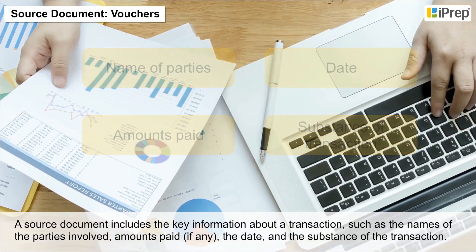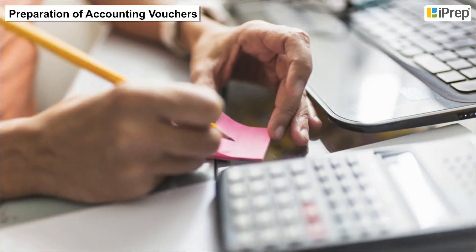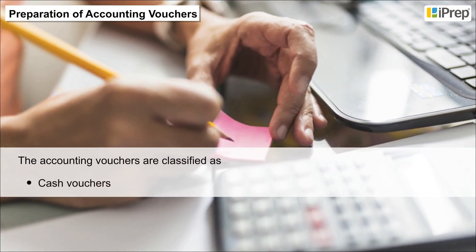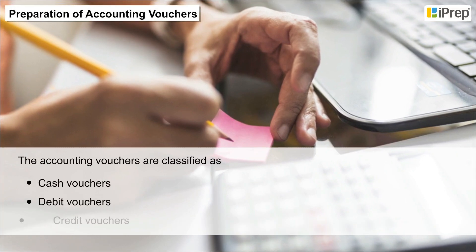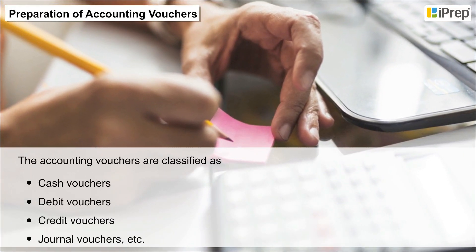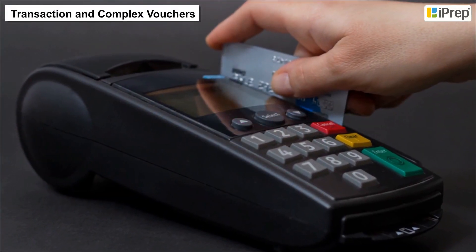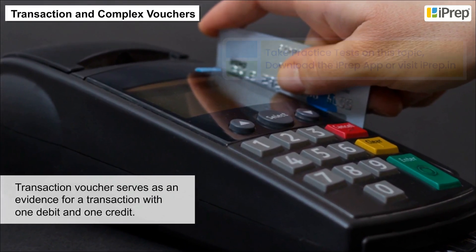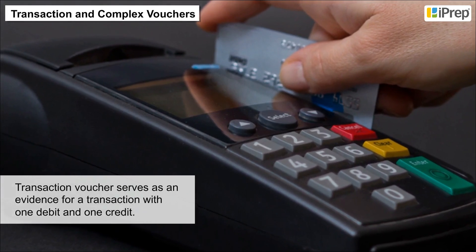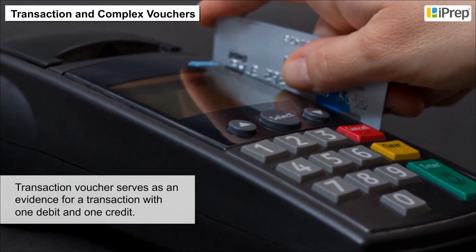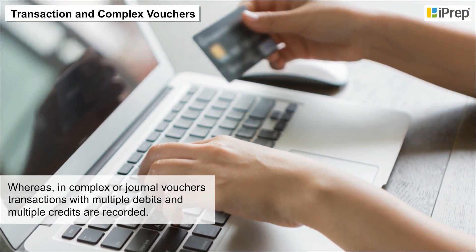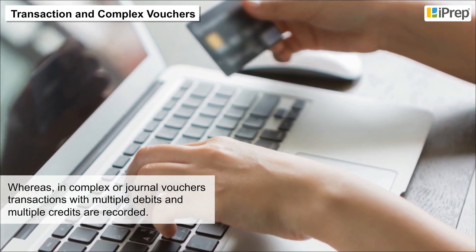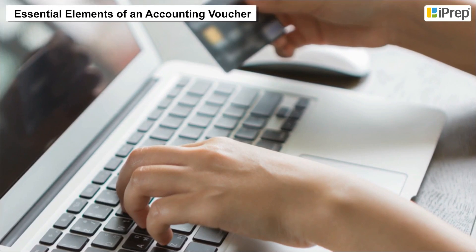Accounting vouchers are classified as cash vouchers, debit vouchers, credit vouchers, journal vouchers, transaction vouchers, and complex vouchers. A transaction voucher serves as evidence for a transaction with one debit and one credit, whereas in complex or journal vouchers, transactions with multiple debits and multiple credits are recorded.